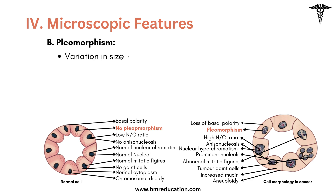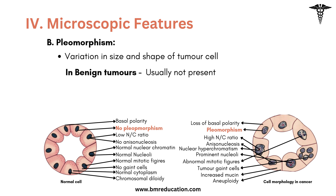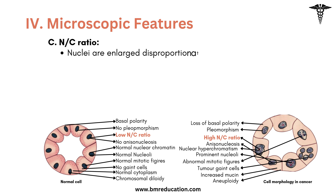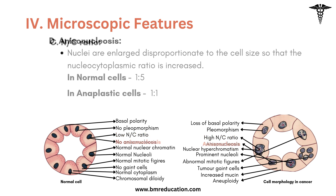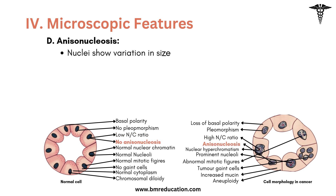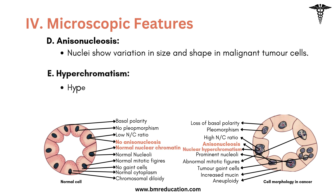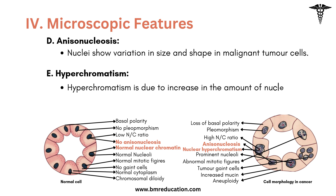The next feature is pleomorphism — variation in size and shape of tumor cells. It is usually not present in benign tumors, but is often present in malignant tumors. The next feature is the nucleus-to-cytoplasmic ratio: the nuclei are enlarged disproportionate to the cell size, so the ratio is increased. In normal cells it is 1-to-5, but in anaplastic cells it is 1-to-1. The next feature is anisonucleosis, in which nuclei show variation in size and shape in malignant tumor cells. Another feature is hyperchromatism, which is due to an increase in the amount of nucleoprotein resulting in dark staining of the nuclei.